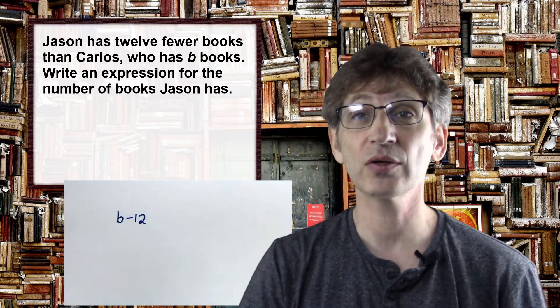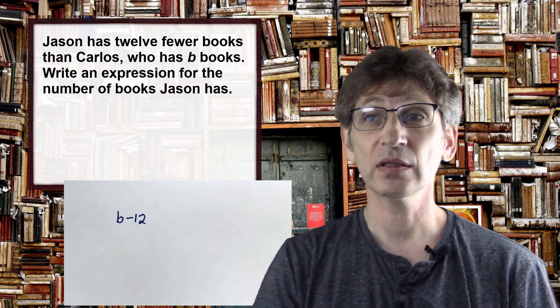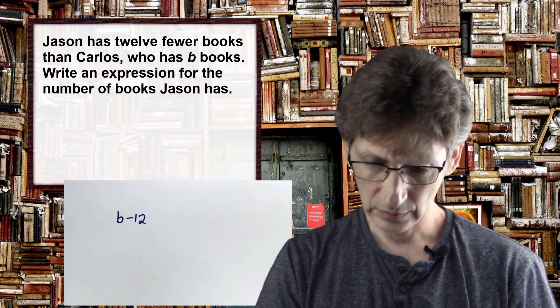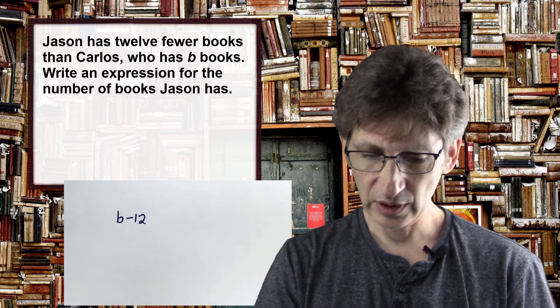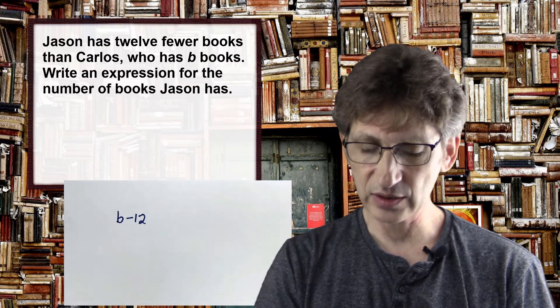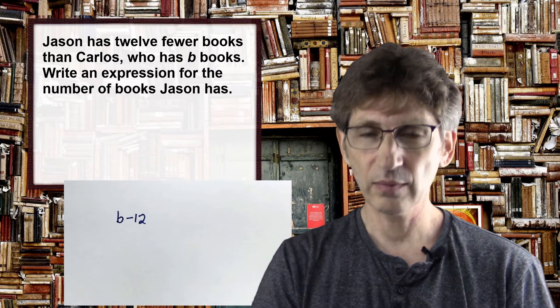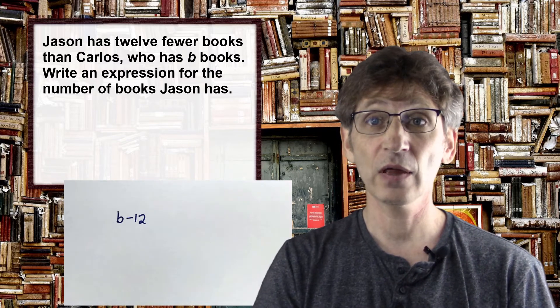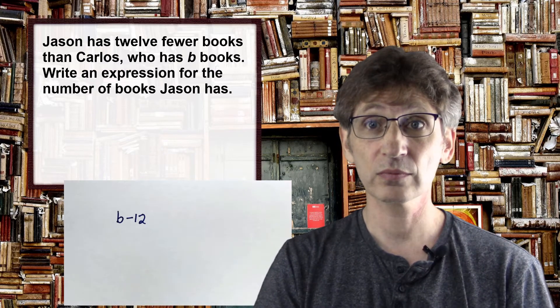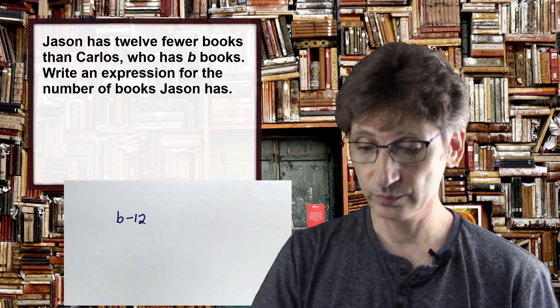So Carlos has b books. Jason has b minus twelve books — twelve fewer than Carlos.